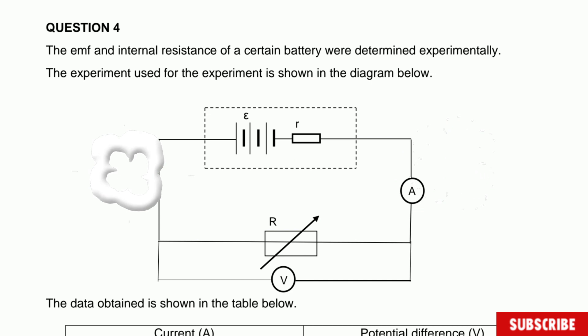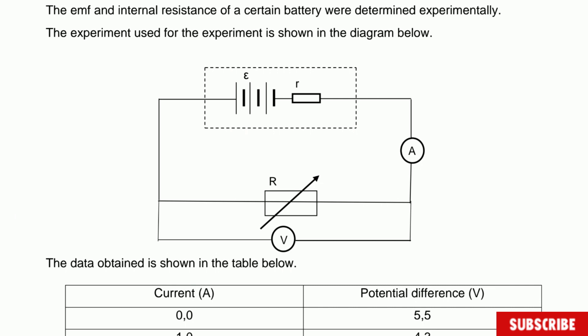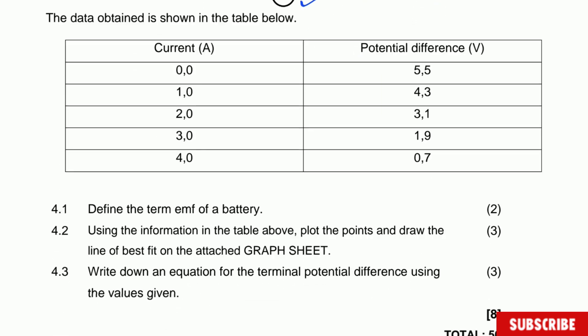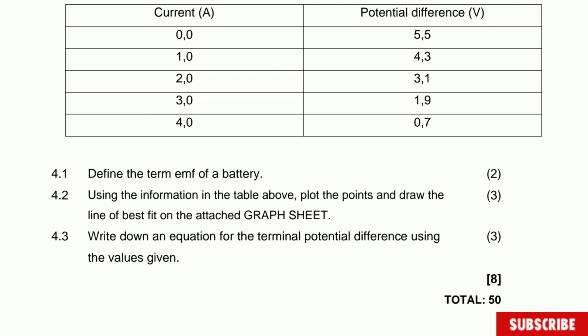We're doing the challenge test on electric circuits. This question states: the EMF and internal resistance of a certain battery were determined experimentally. The circuit used is shown in the diagram below. The R with the arrow is a rheostat — a variable resistance that you can change, increase or decrease. The data obtained is shown in the table, which records the current and the potential difference measured by the voltmeter.